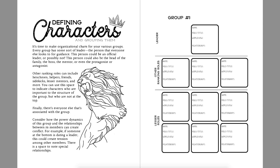Once you know the leader, you have other ranking roles. They don't have to be people who are ranking — it can also be specializations that people have. So maybe one person is really good at hunting, so that's their role in the group. Or one person is the softer side, or the relationships person, or the poet. Just think of what other roles need to be filled within your group, or what roles your characters can fill — what is their place in this group?